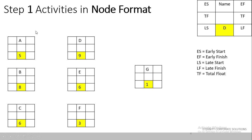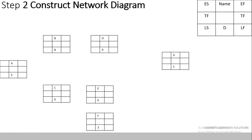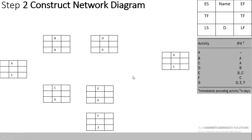There are seven activities and I have highlighted the duration of these activities, so Step 1 is clear. In Step 2 we will construct the network diagram. To construct it, we need to know the activity names, durations, and the information about predecessors and successors. On the right-hand side you can see the IPA — immediately preceding activities — as given in the question itself.